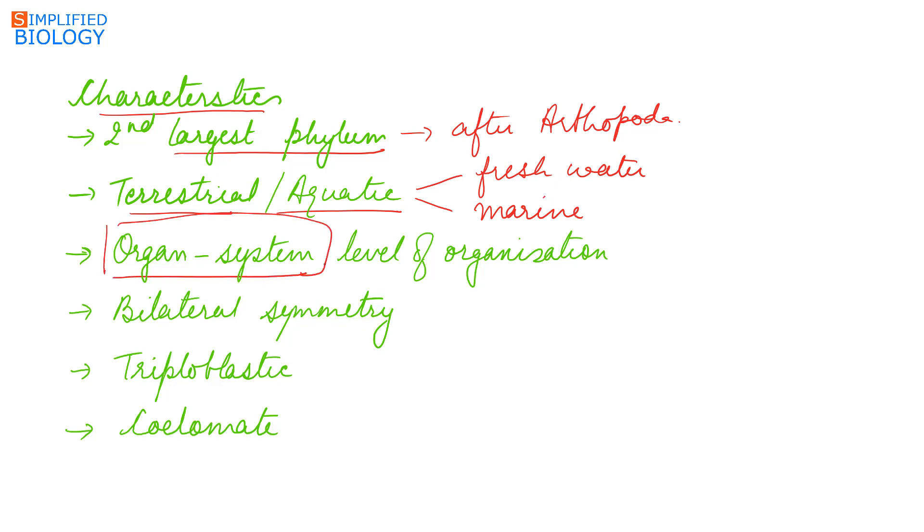They show bilateral symmetry, meaning the body can be divided into two equal halves at one plane passing through the center. They are triploblastic, meaning three-layered body wall: ectoderm, mesoderm, and endoderm.